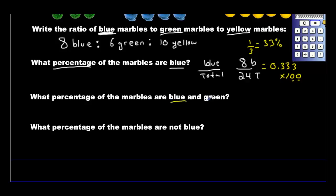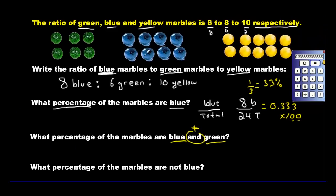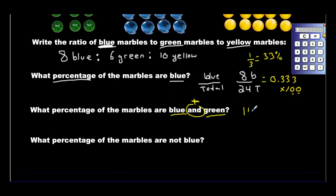What percentage of the marbles are blue and green? Doesn't and mean plus? We add the blue and the green: 8 plus 6 is 14. But to make a percentage, you need a denominator, the total, which is 24. Let's pop this into our calculator. 14 divided by 24 gives us 0.583. Turn that to a percent by bouncing it twice: 58.3% of the marbles are blue and green.